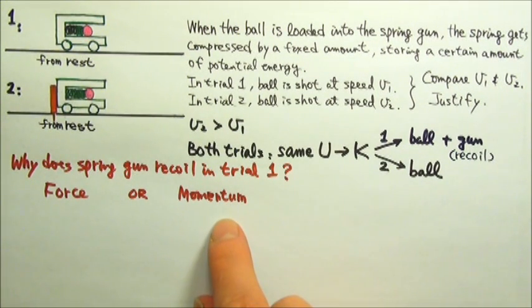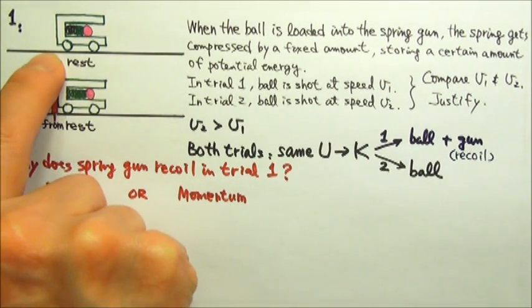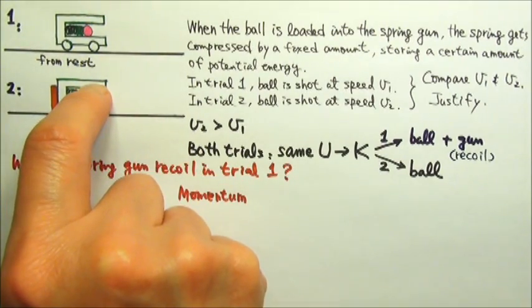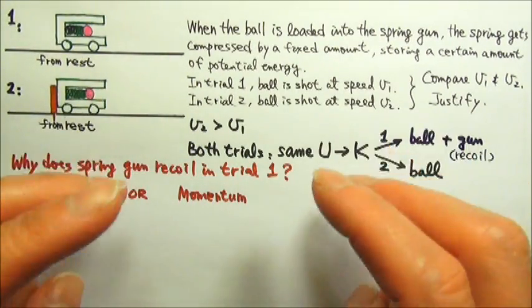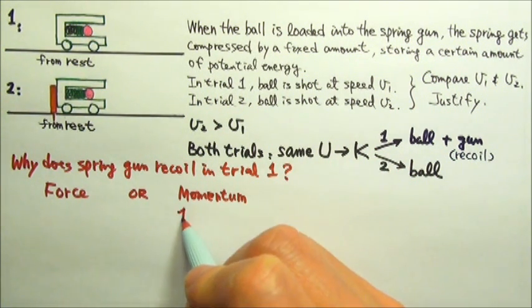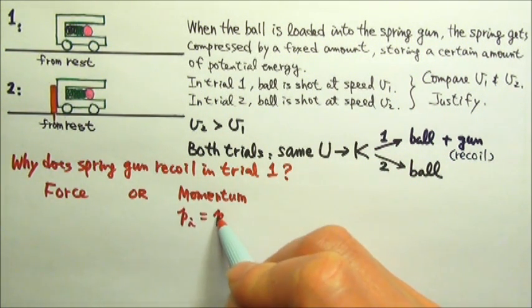For the momentum approach, we can say that without the barrier, the net force on the system is zero. Therefore, in this explosion, the momentum is conserved. So the initial momentum equals the final momentum.